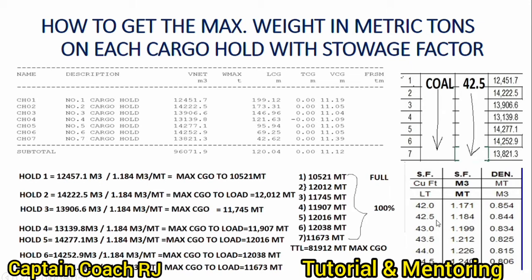Very basic formula only. Now let's go to cargo hold number one. The total capacity of cargo hold number one is 12,457.1 cubic meters. We divide that by the storage factor of 1.184 cubic meters per metric ton. The result — the maximum cargo to load — is approximately 10,521 metric tons. The cubic meter units cancel, leaving metric tons.